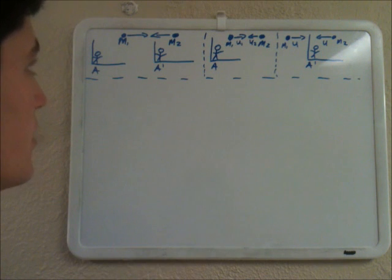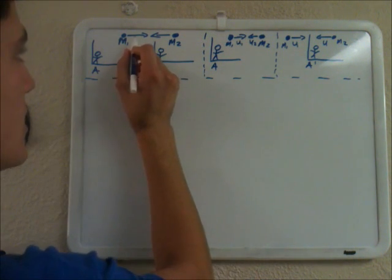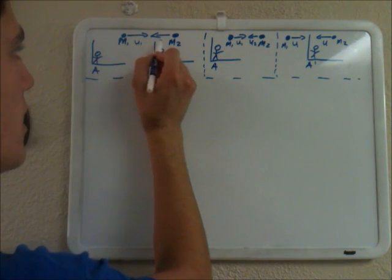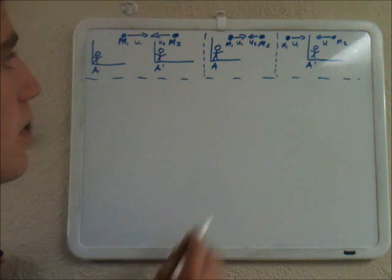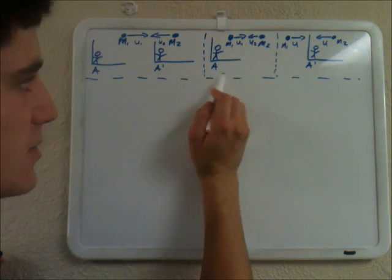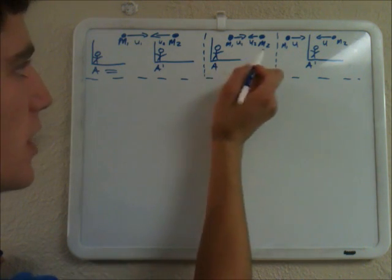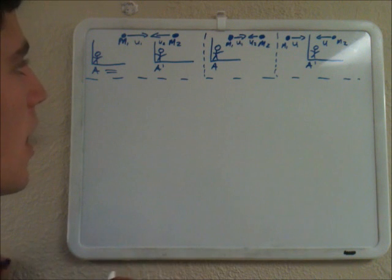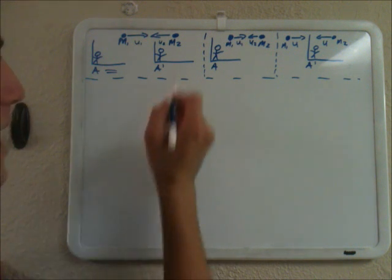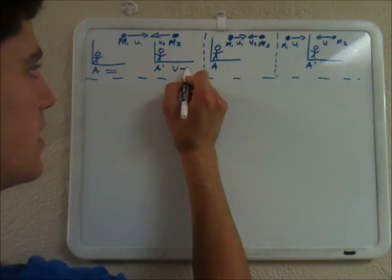From A's perspective, these two objects are moving at velocities u1 and u2. As you can see right here, this is from A's perspective — u1 and u2. And A prime is moving at velocity v.